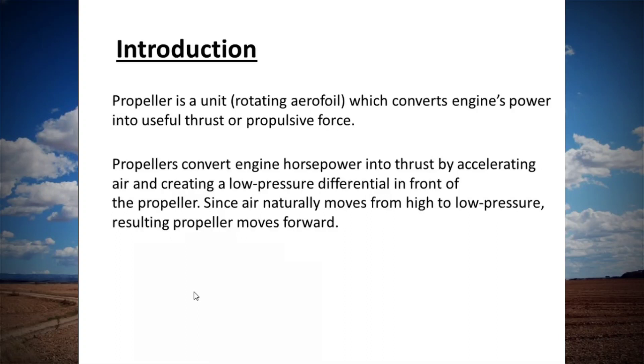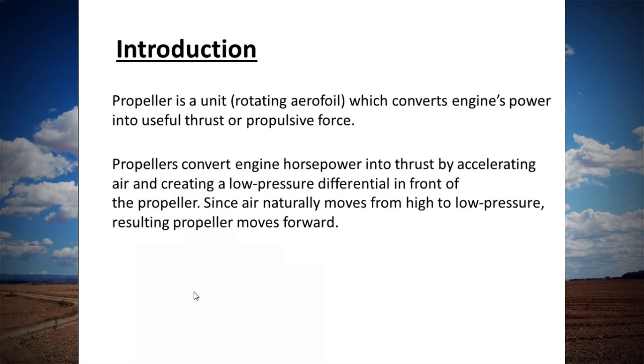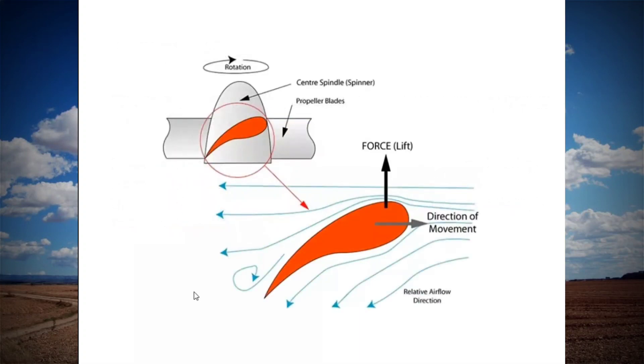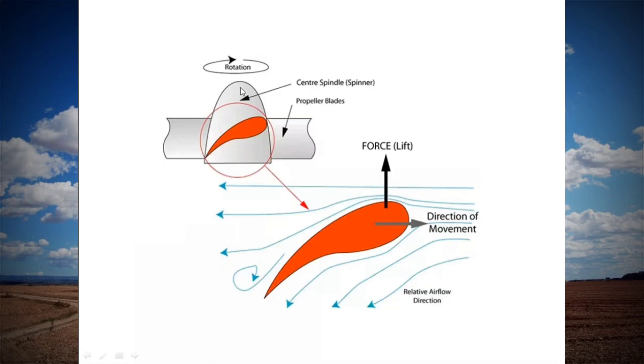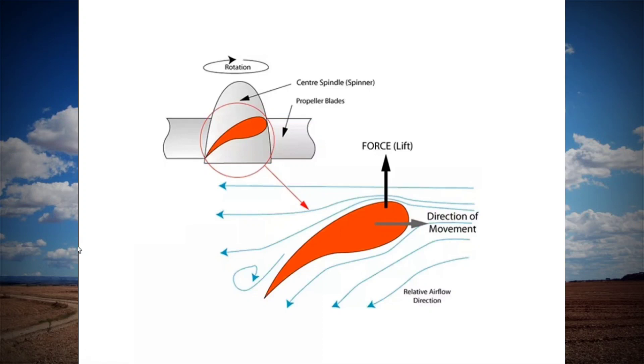Propeller always converts engine horsepower into thrust by accelerating air and creating a low pressure differential in front of propeller. Since air naturally moves from high to low pressure, resulting propeller moves forward. Let me explain by this diagram. I have taken an example of several blades which are fixed with spinner. I am taking a cross section of one of the blades. So cross section of this blade is just like an aerofoil.